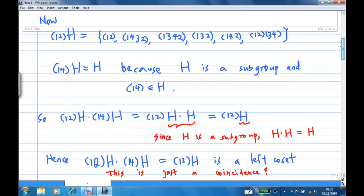Then how do we multiply the left coset now? In this case, I'll observe that (12)H we have found already. (14)H happens to be H because H is a subgroup and (14) is an element of H.